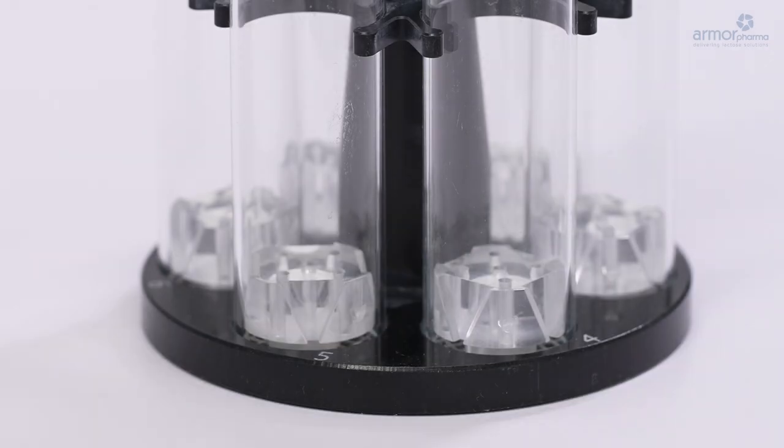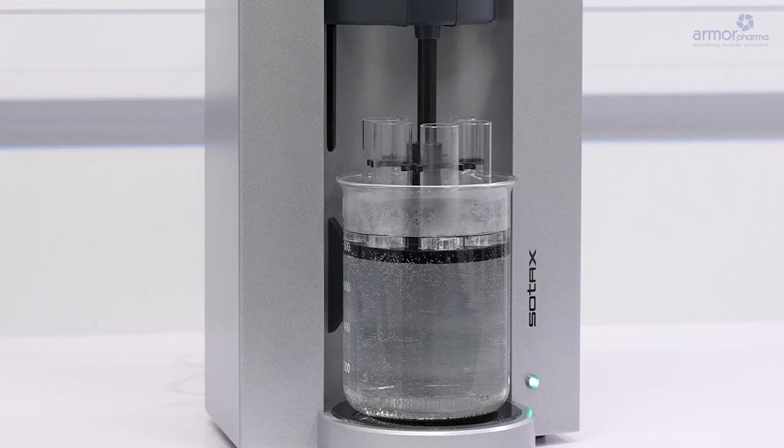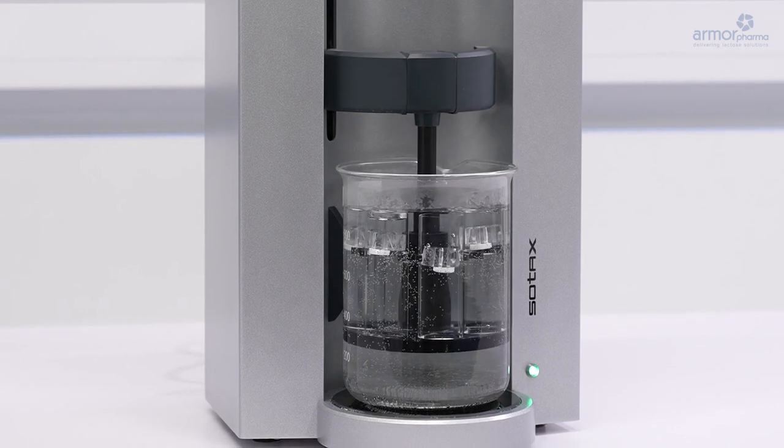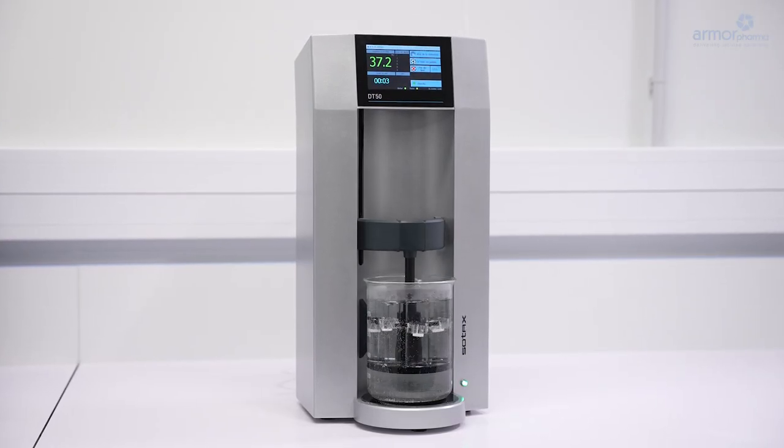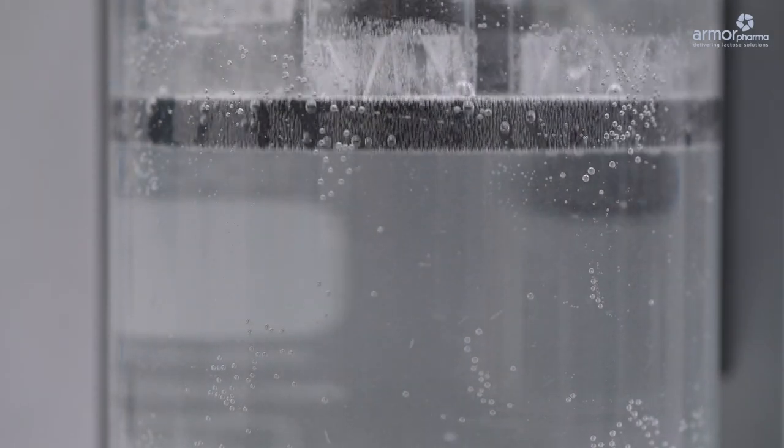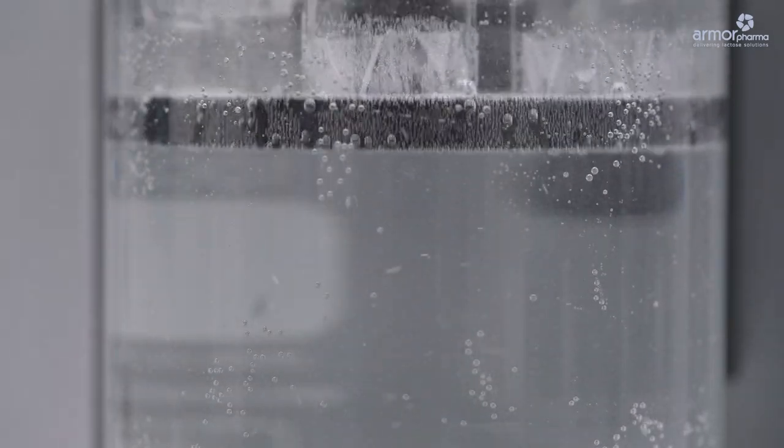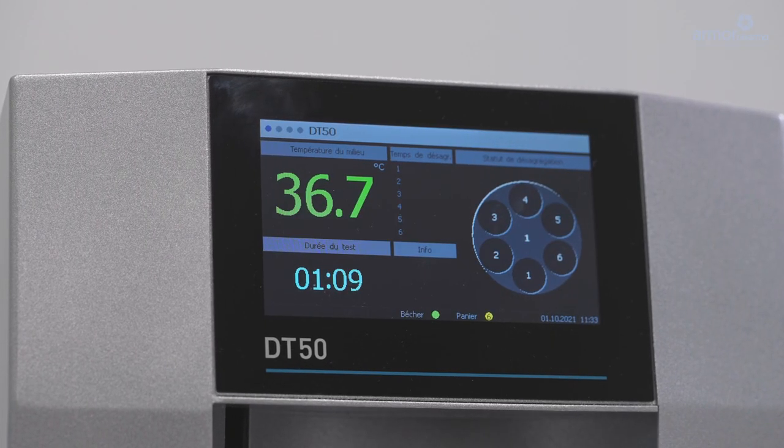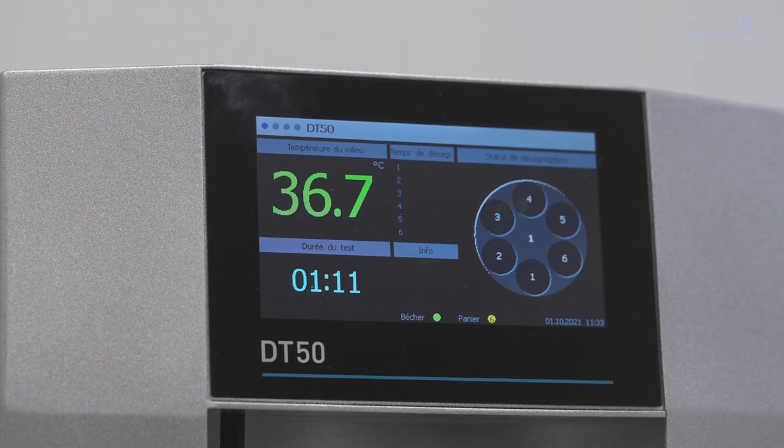Discs are placed on top of each. It is then raised and lowered at a constant frequency into a one liter beaker of water or acid at 37 degrees Celsius plus minus 2 degrees, which is like the human body temperature. The time is recorded when the dosage units have completely disintegrated.